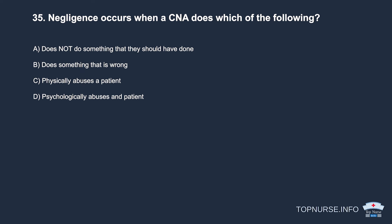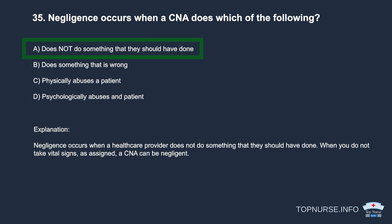Question 35: Negligence occurs when a CNA: a. Does not do something they should have done. b. Does something that is wrong. c. Physically abuses a patient. d. Psychologically abuses a patient. Correct answer: a. Does not do something they should have done. Negligence occurs when a healthcare provider fails to do what they should have — for example, not taking vital signs as assigned.